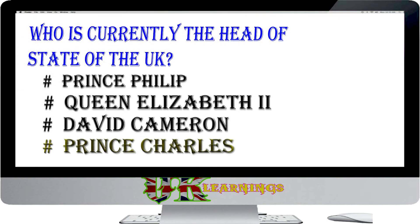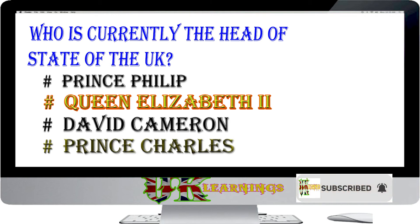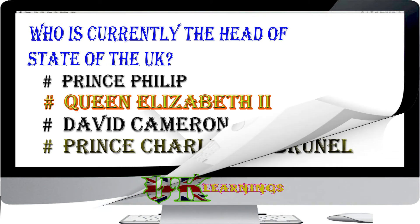Who is currently the head of state of the UK? Options: Prince Philip; Queen Elizabeth II; David Cameron; Prince Charles. The answer is Queen Elizabeth II. Queen Elizabeth II is the head of state of the UK. She is also the monarch or head of state for many countries in the Commonwealth.